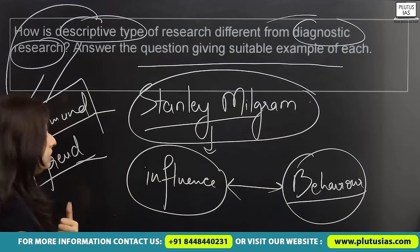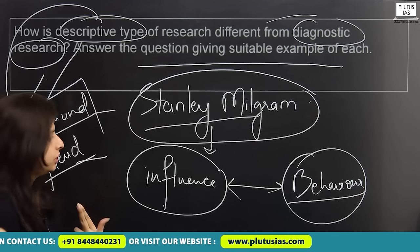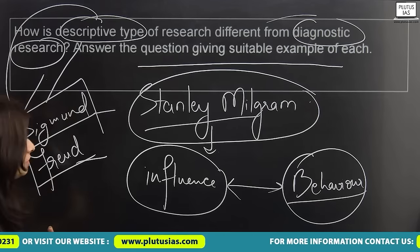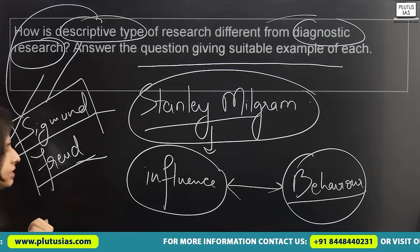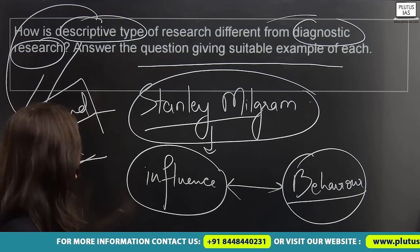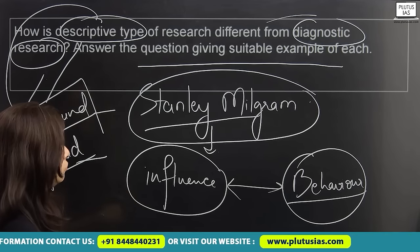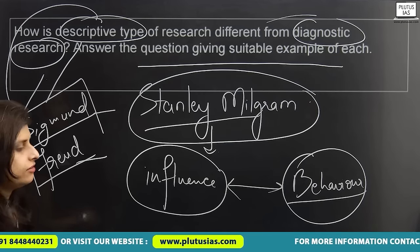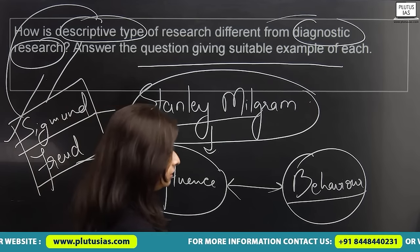The four psychologists are: Jean Piaget, B.F. Skinner, Sigmund Freud, and Stanley Milgram. This is how I would attempt the first part of the first question. Since it was a 10-marker question, I think this would be enough, but you can add on based on your requirements.